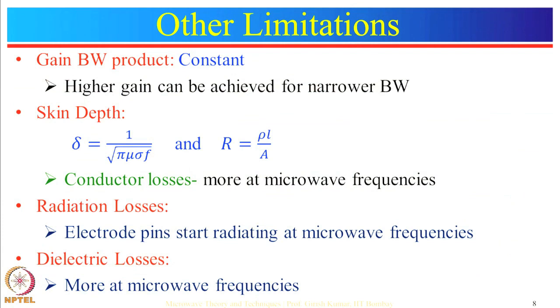The next limitation is radiation losses. At microwave frequencies, electrode pins of the vacuum tubes start radiating, causing radiation losses. The last limitation is dielectric losses — as frequency increases, the loss tangent of a dielectric material increases, so there will be more dielectric losses at microwave frequencies. This covers all the limitations of conventional tubes at microwave frequencies.